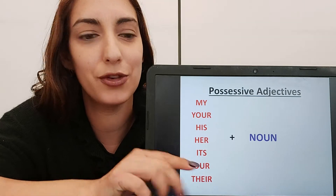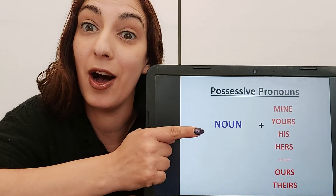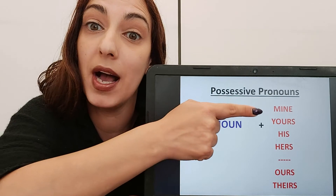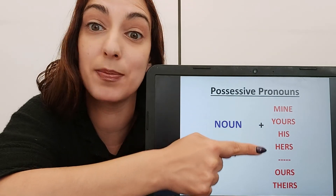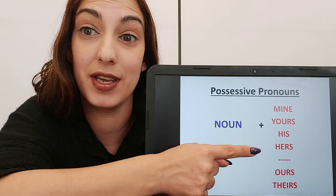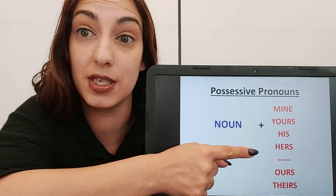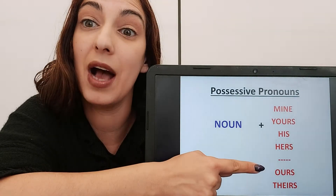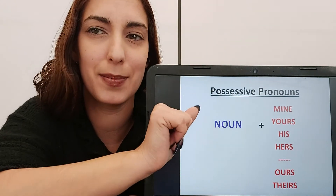Let's see what comes after a noun. After a noun, I put possessive pronouns: mine, yours, his, hers. But you'll notice there is nothing for 'it' — so be very careful there. There is no possessive pronoun for the word 'it'. Ours and theirs. Let's look at some examples.